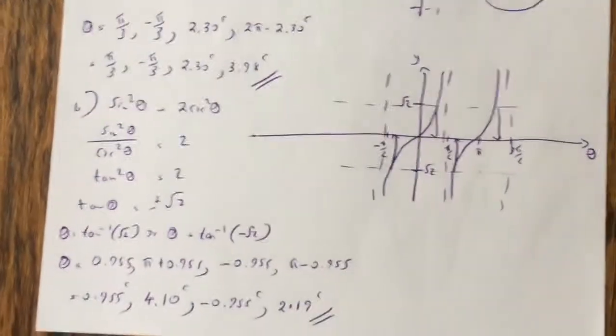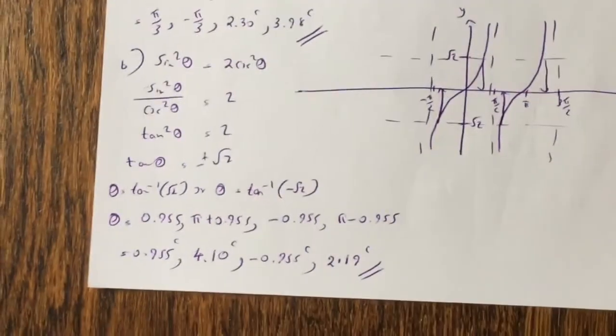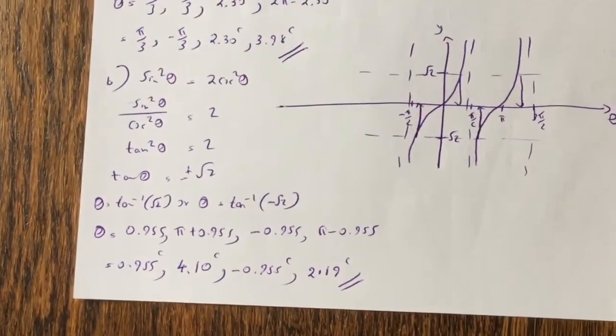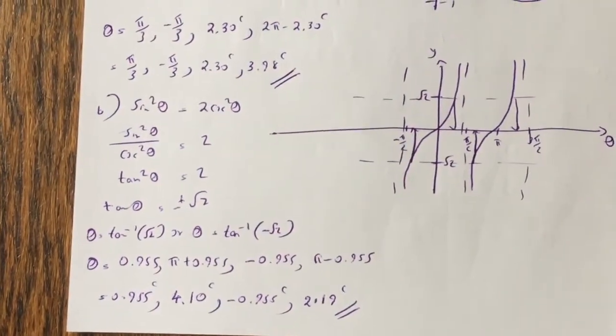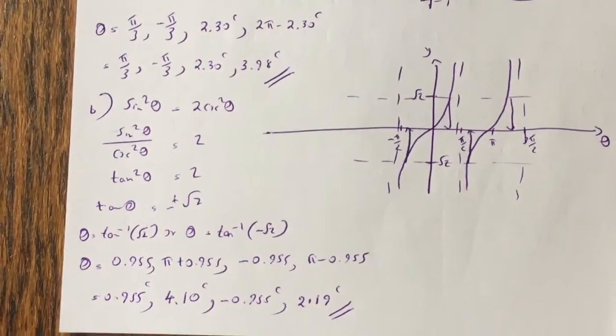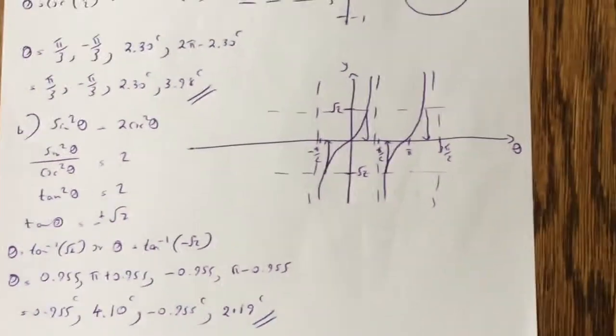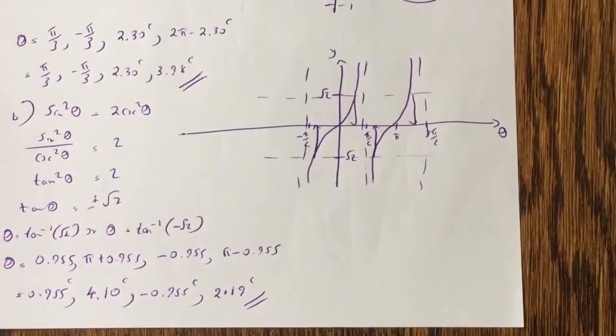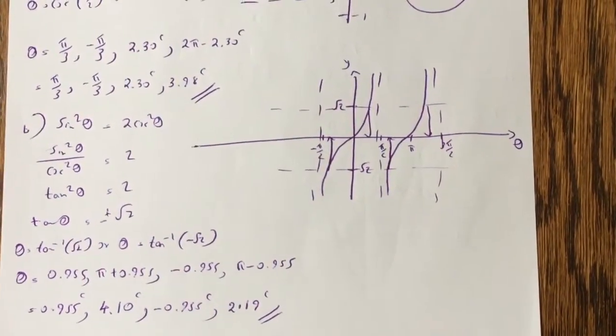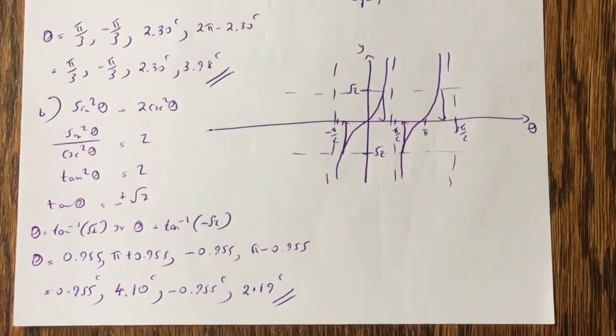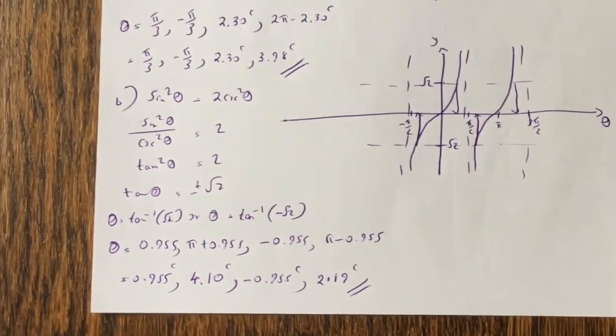The next equation is sine squared theta equals 2 cos squared theta, so sine squared over cos squared becomes tan squared, so tan theta equals plus or minus root 2, and then you do the same thing, you solve it, and you can see I've drawn the tan graph here, and it's intersecting two places for root 2, and two places for minus root 2.